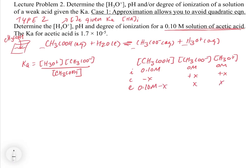Now we have our equilibrium concentrations as variables and our Ka. Plugging in: 1.7 times 10 to the minus 5 equals X squared over 0.10 molar minus X. You're probably thinking you've got to do a quadratic — and technically you'd be right, because the denominator is not squared, so this requires a full quadratic to solve as written.